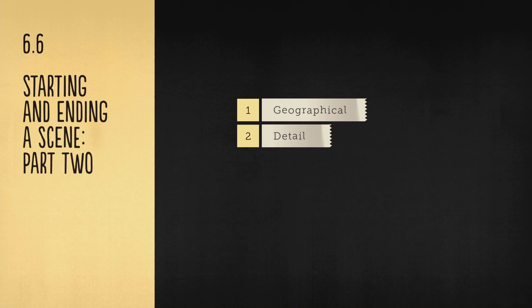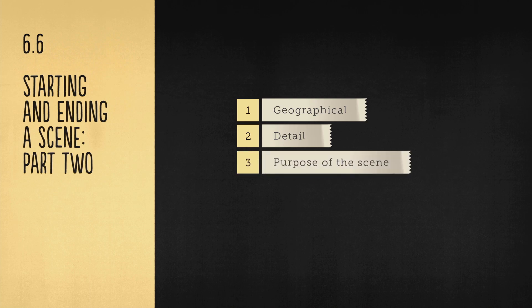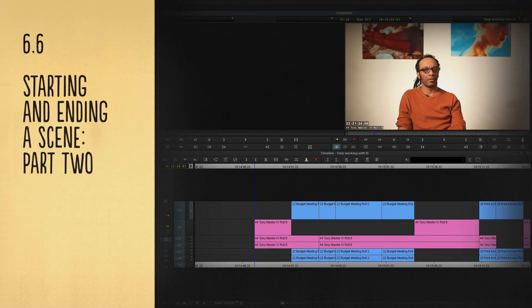Let's go back and look at a final point in this subject — number three: Purpose of the Scene. Another theme on how to start a scene is around the purpose of the scene. Let's go back and ask the question we looked at during the sync chapter: what is this scene about? Let's look again at one of our previous cuts.